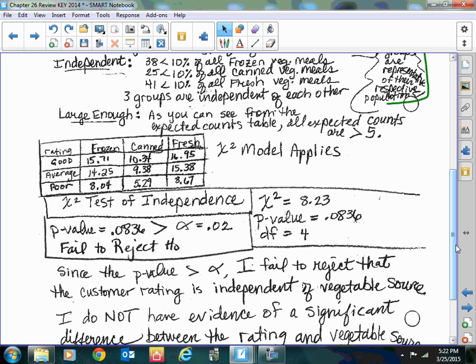Since I have three groups, I'm going to write them all out separately. They're less than 10% of all frozen vegetable meals, and so on. The three groups are independent of each other. Large enough: as you can see from the expected counts, all expected counts - I saw this missing on quizzes - you just said they are less than five. Well, what's greater than five? Greater than or equal to. It's these expected counts here. And then don't forget your chi-squared model applies.